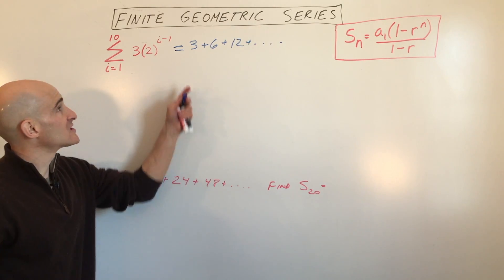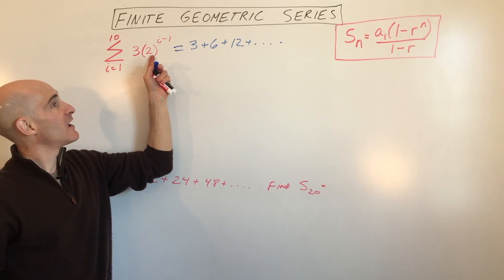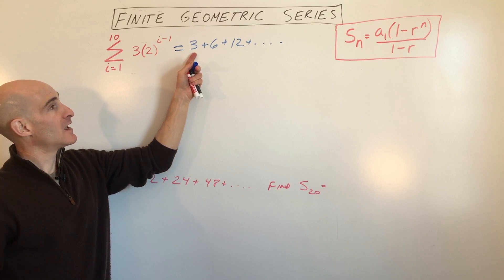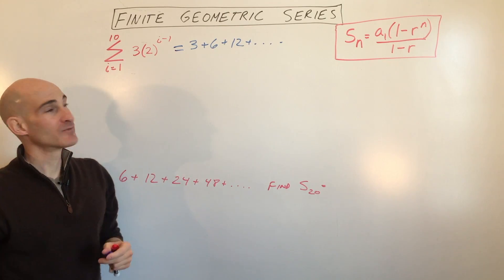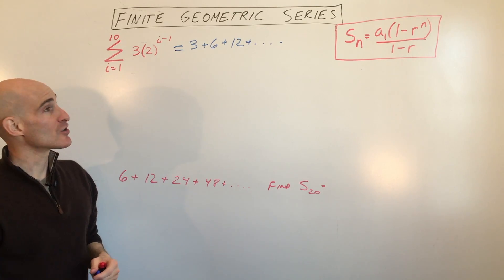So what you can see here is that we're multiplying by 2 each time. The base is 2, and the first term is 3. So we can see that. That's the first term. And so our ratio is 2. We're multiplying by 2.